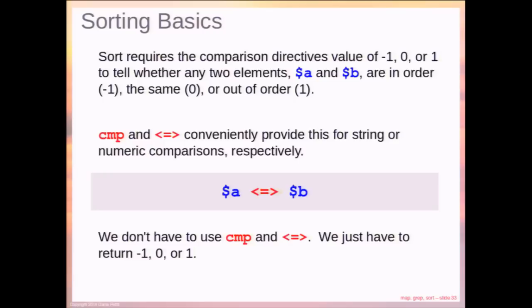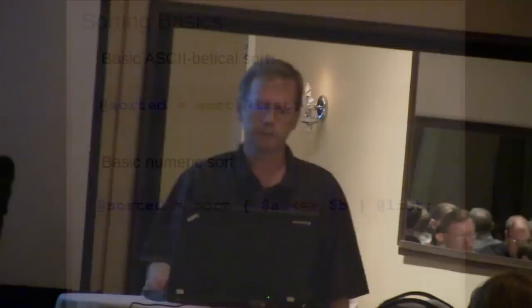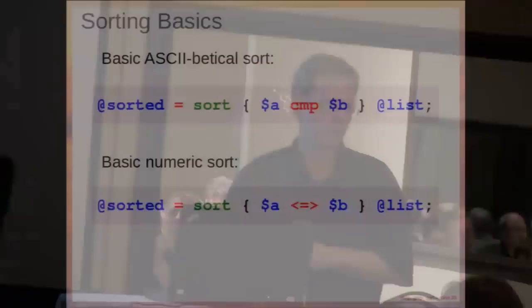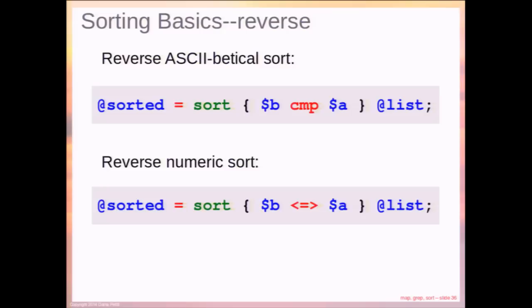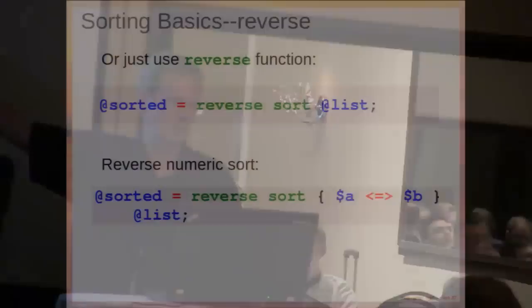Some examples of sorting. The default sort is very easy. For a numeric sort — since the default is string-wise — you use dollar a spaceship dollar b. The default is actually the same as dollar a cmp dollar b. To reverse the sort into descending order, you can swap a and b, since it returns -1 instead of 1 and vice versa — or you can use the reverse function. The reverse function is generally preferred because it's obvious what you're doing, since not all Perl programmers understand the swapped dollar a/dollar b syntax. However, reverse has the overhead of an extra function call.